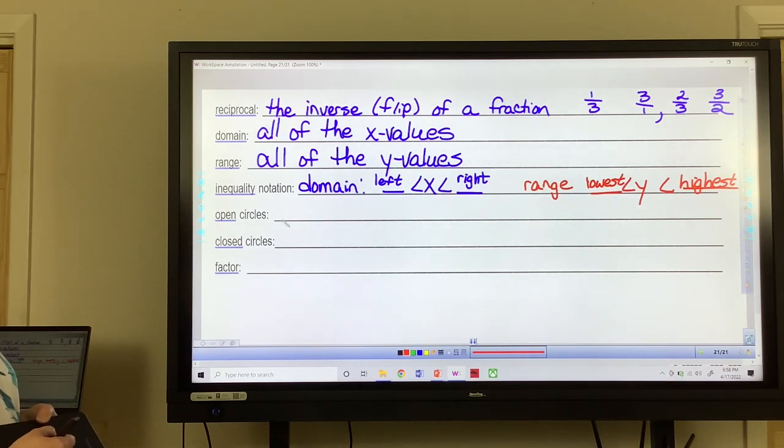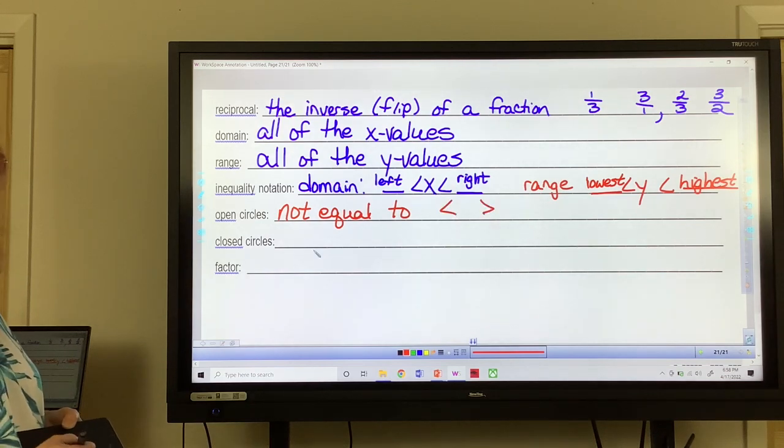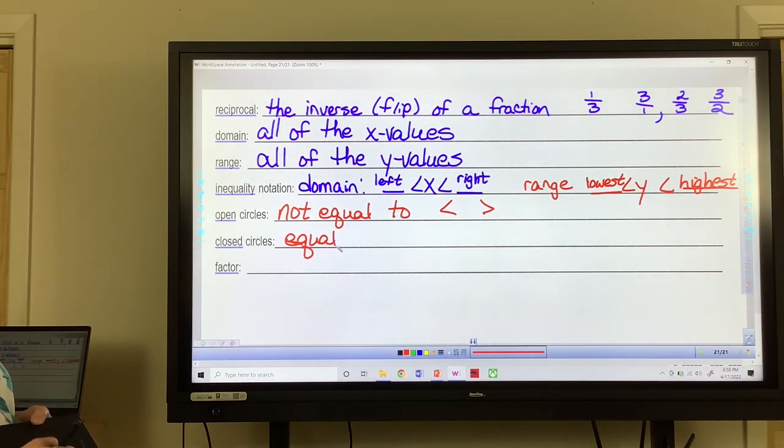Open circles mean not equal to. So you're only going to use the less than or the greater than symbols. The closed circles means equal to. And so you will use the less than or equal to or the greater than or equal to symbols. And so on these, if you have an open circle here, you would put a line underneath it. I'm sorry, if you had a closed circle here, you'd put the line underneath it. If you had an open circle, you would just leave the inequality symbol alone.